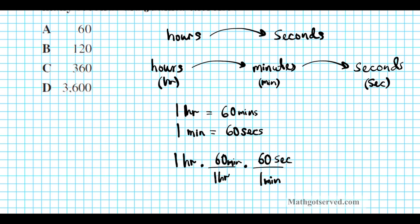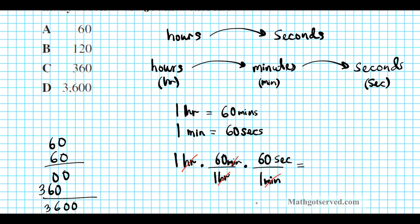This hour and this hour divide out, this minute and this minute divide out, and we're left with seconds. Multiplying horizontally: 1 times 60 times 60. 60 times 60: we get 3,600. So there are 3,600 seconds in one hour. Our answer is option letter D.